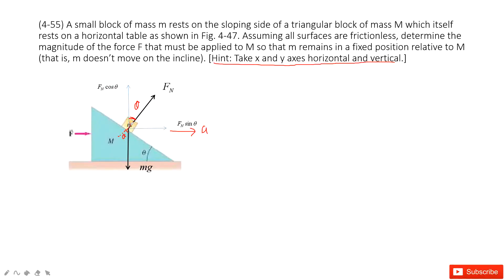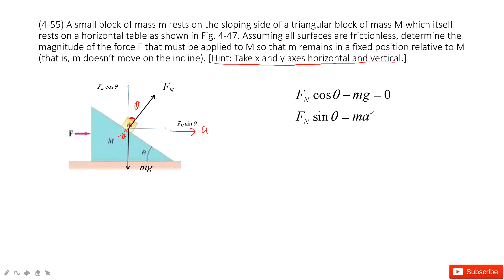Now, can we find the acceleration for this small object? Yes. Vertically, the net force is zero because there is no vertical acceleration. So: Fn·cosine(θ) − mg = 0. Horizontally, the net force gives: Fn·sine(θ) = m·a. When we solve these two equations, we get acceleration a = g·tan(θ).